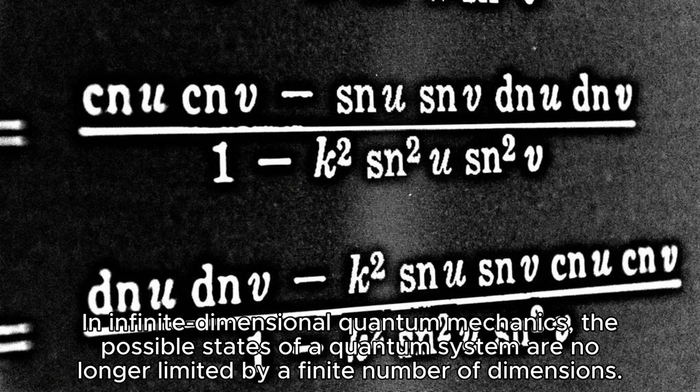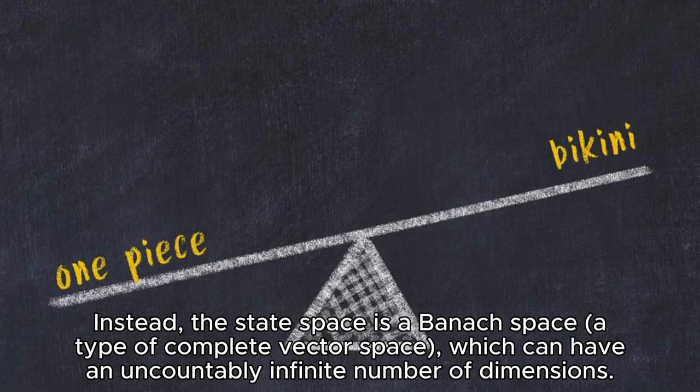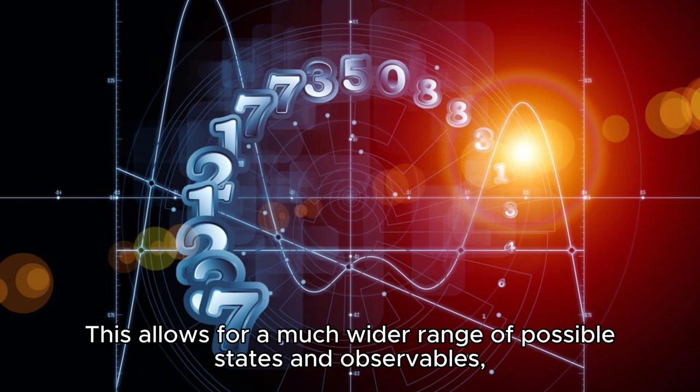In infinite dimensional quantum mechanics, the possible states of a quantum system are no longer limited by a finite number of dimensions. Instead, the state space is a Banach space, a type of complete vector space, which can have an uncountably infinite number of dimensions. This allows for a much wider range of possible states and observables.